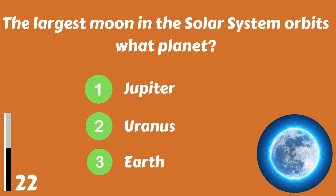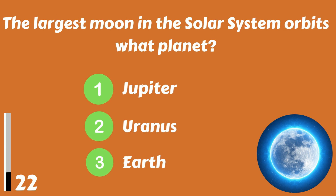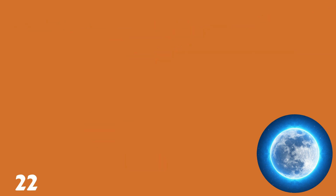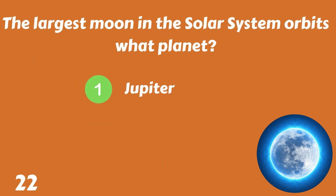The largest moon in the solar system orbits what planet? Jupiter, Uranus or Earth? The answer is Jupiter.